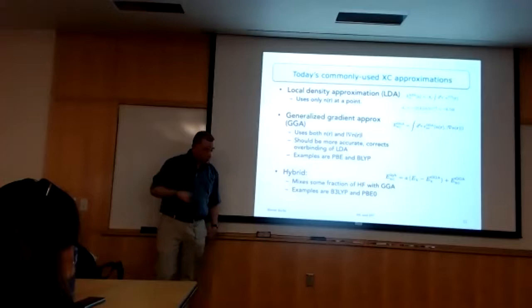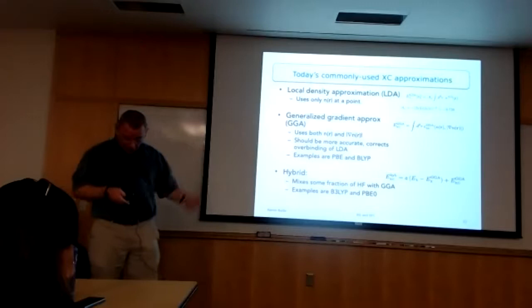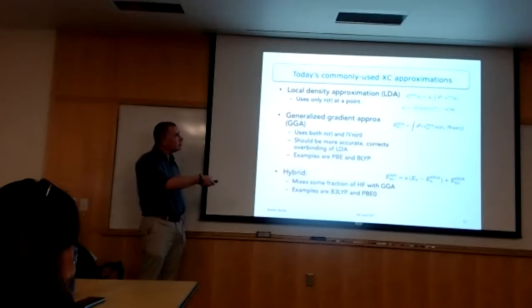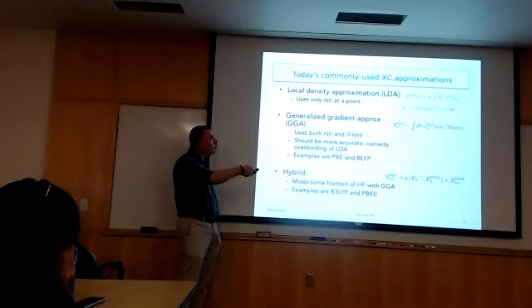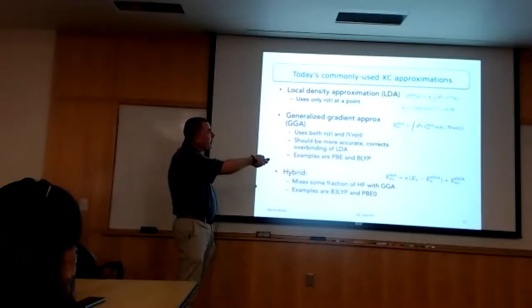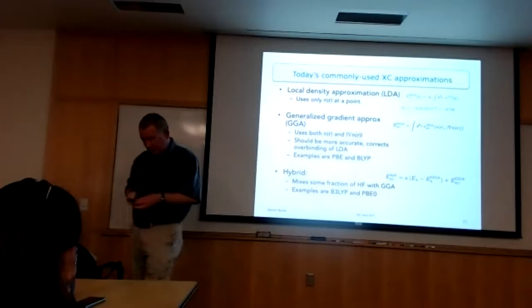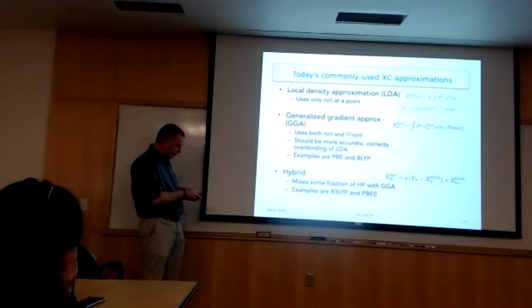There's no totally free lunch — you have to write down approximate functionals, and how accurate the approximation determines how accurate your answers will be for electronic structure problems. The standard ones in use today use the density and its gradient, and a little bit of Hartree-Fock — what we call local or semi-local approximations, meaning you get the energy at a point from looking at the density and its gradient. These are approximate but usefully accurate, though not as accurate as we'd like.